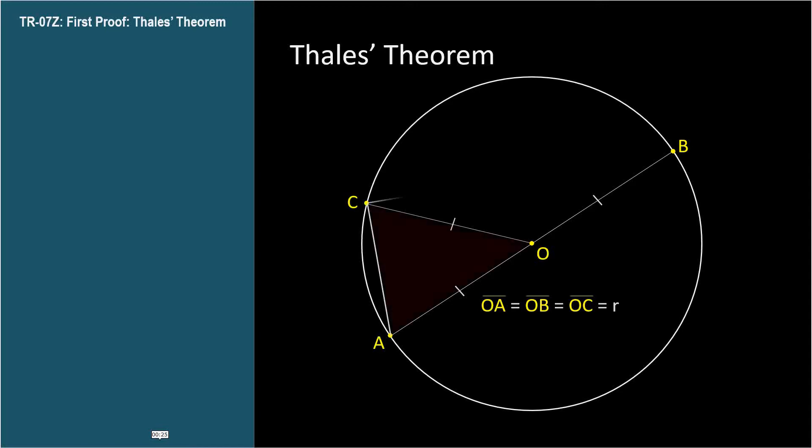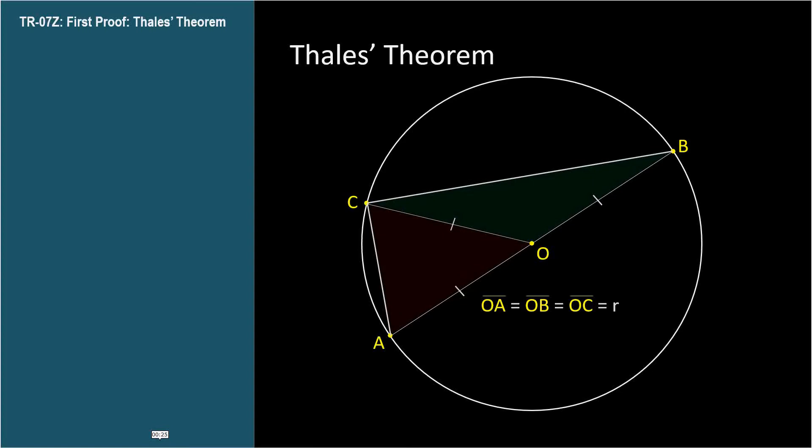Let's connect the points to form two triangles. Each triangle is an isosceles triangle because each has two equal sides, the sides corresponding to the circle's radius. In an isosceles triangle, the angles opposite the equal sides are congruent. So let's call the congruent yellow angles alpha, and the congruent blue angles beta.